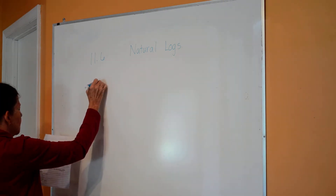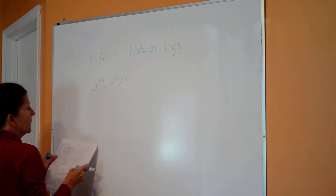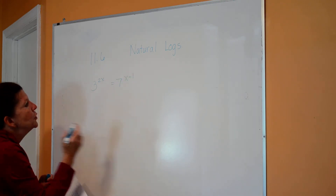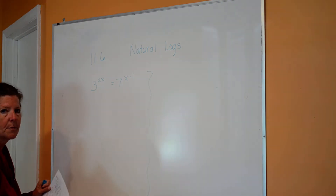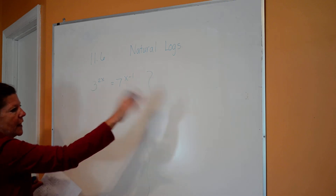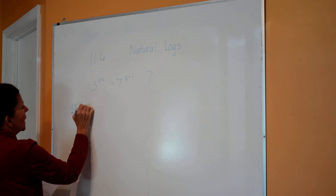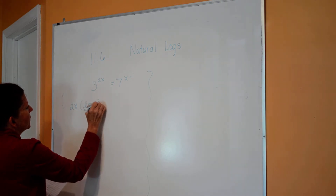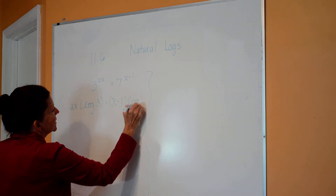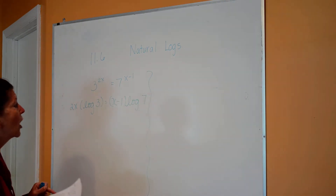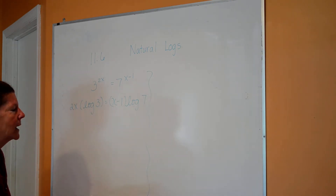Let's do another one. Say I have 3 raised to the 2x power is equal to 7 raised to the x minus 1 power. You can do it with either natural logs or common logs — it doesn't matter. I'll use common log here: 2x times the log of 3 is equal to x minus 1 times the log of 7. I typically use common log because I can write LOG easier than LN.